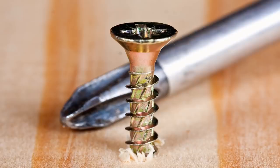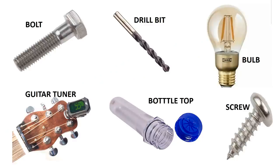To drive a screw into the wood, it has to turn in a circular motion by a screwdriver. Examples of screws are bolts, drill bits, bottle tops, guitar tuners, screws, and bulbs.